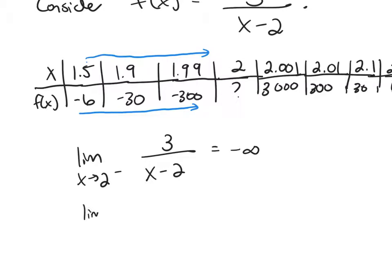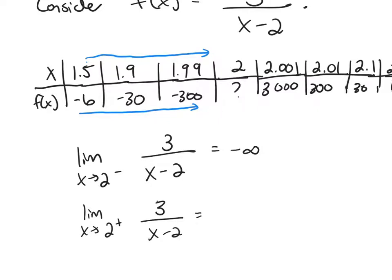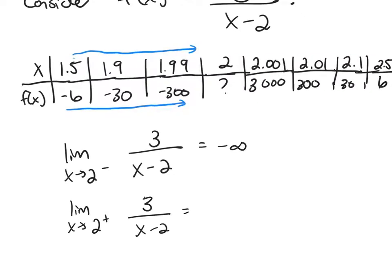And if I look at the other one-sided limit, as I approach 2 from the right, so look at our table now. I'm going to look on the right-hand side. As I approach 2 from the right, what's happening to my numbers, my y values? 6, 30, 300, 3,000. They're getting really, really big. So my guess here would be that this limit would be infinity.